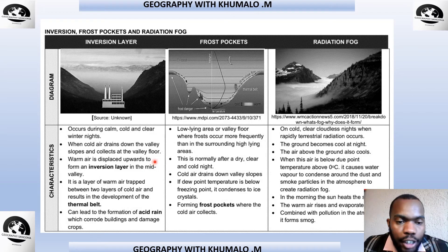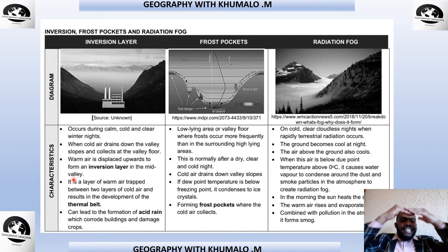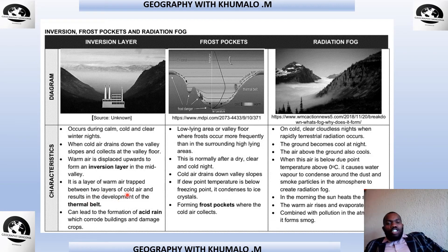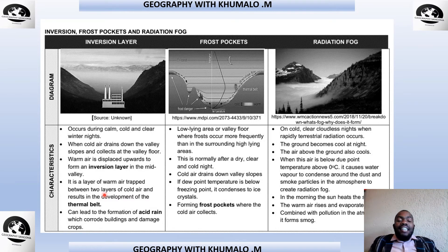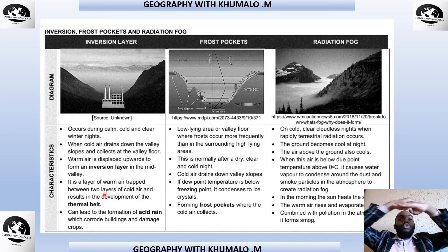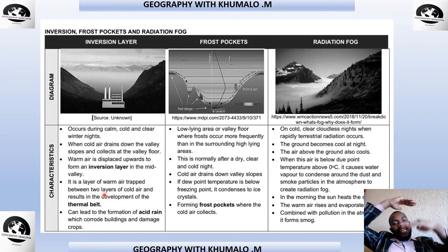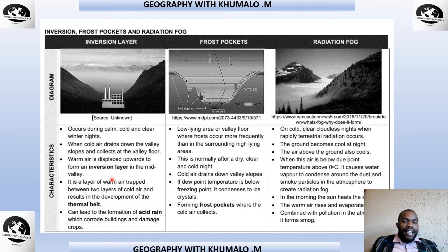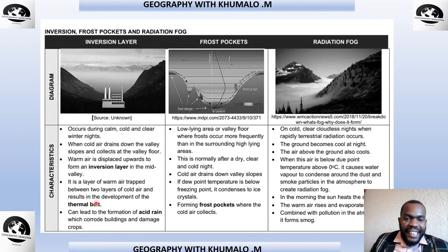The inversion layer is a layer of warm air trapped between two layers of cold air. As the cold air blows down the valley slope, it forces the air in the valley to rise. This air is trapped halfway up the valley between layers of cold air above and below, resulting in the development of the thermal belt. This can lead to the formation of acid rain, which corrodes buildings and damages crops.